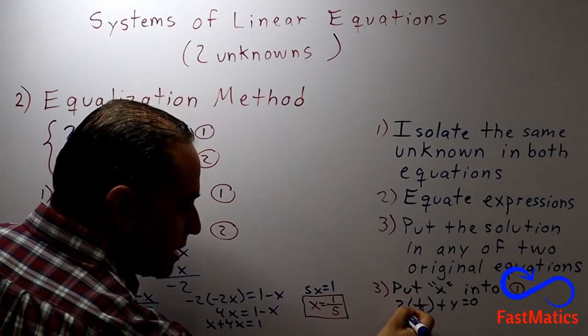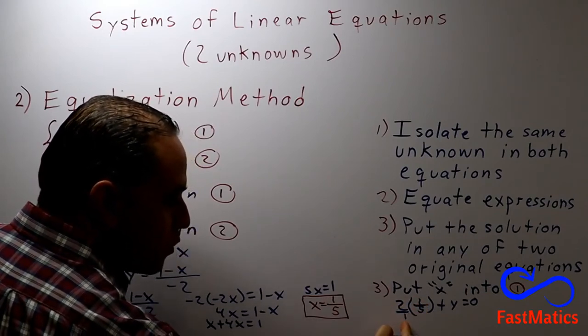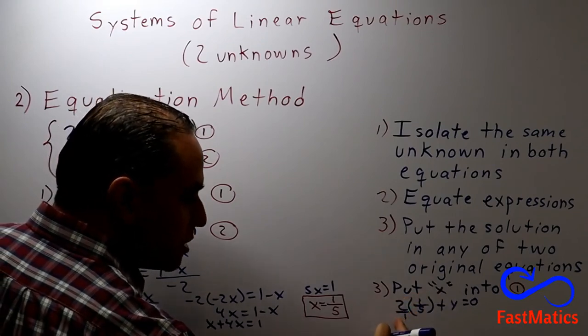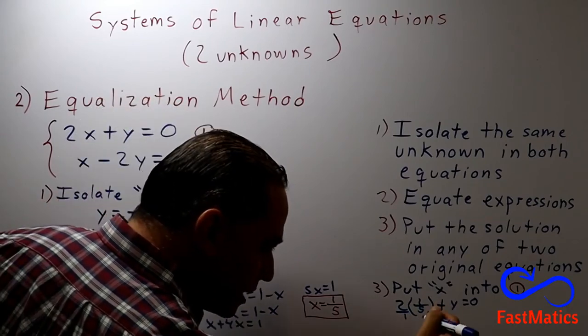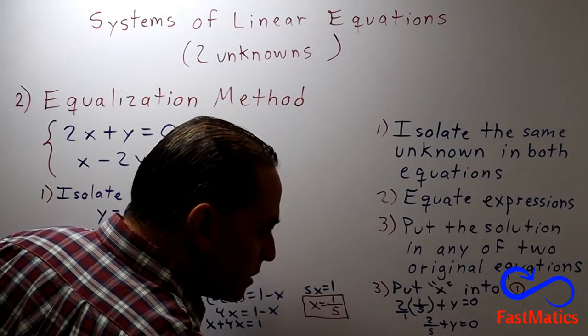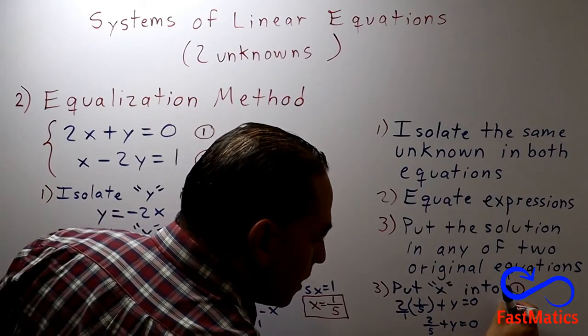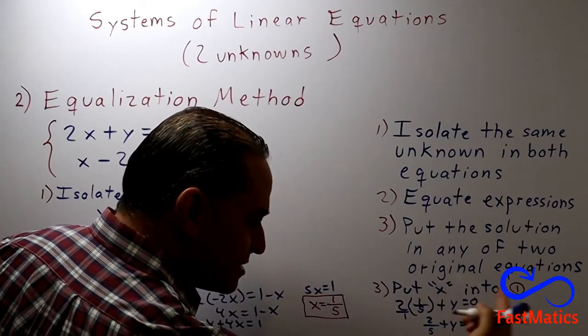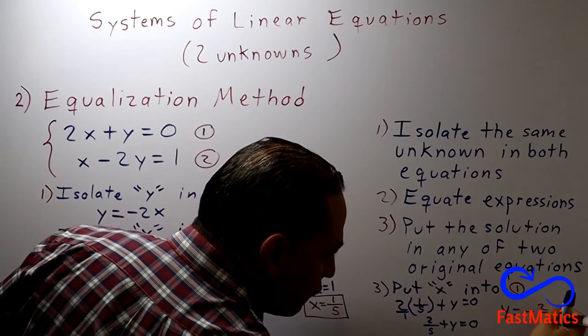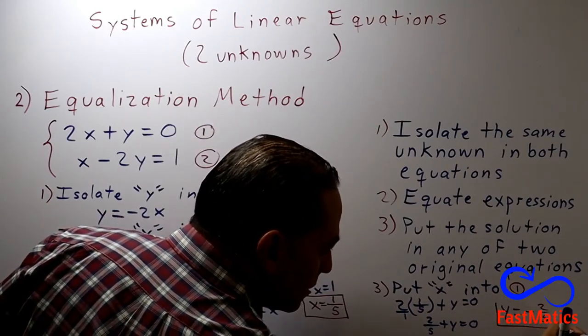In order to do that I can put a small one into the denominator in order to multiply numerator by numerator and denominator by denominator. So then I have 2 over 5 plus y equals 0. And very simple. Y will equal, I pass the 2 over 5 to the other side as negative 2 over 5. And that's it.